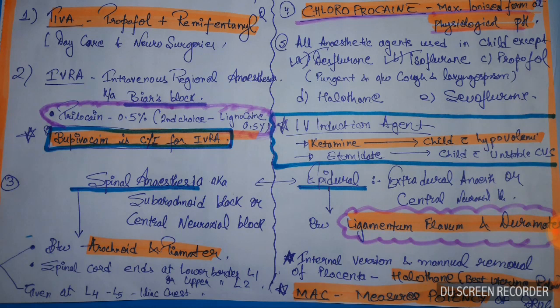Now, regarding spinal anesthesia and epidural anesthesia — in what spaces are they located? Spinal anesthesia is given between the arachnoid and pia mater. The spinal cord ends at the lower border of L1 or the upper border of L2.